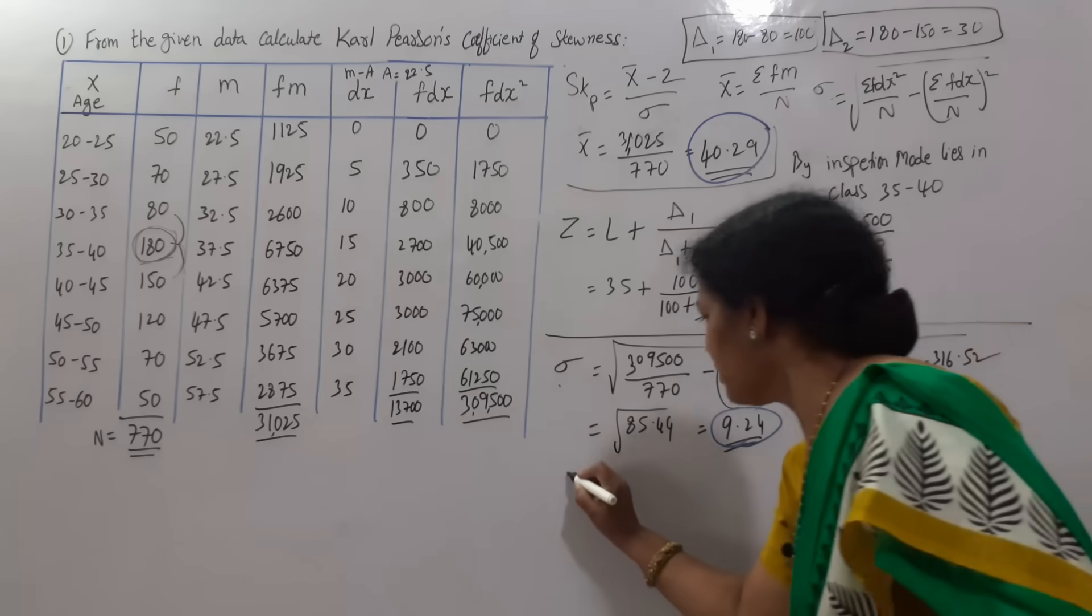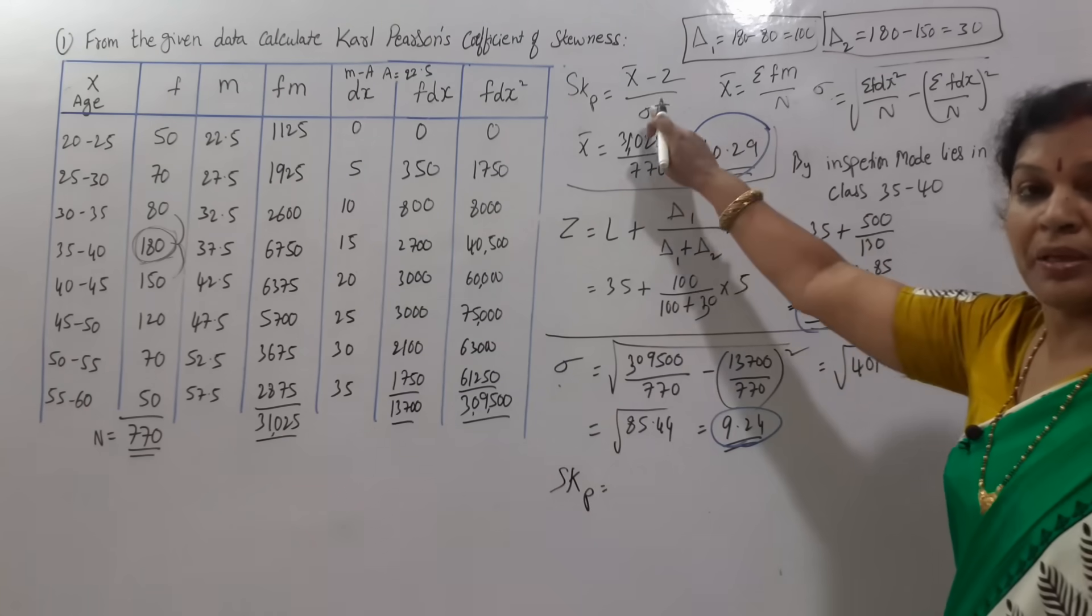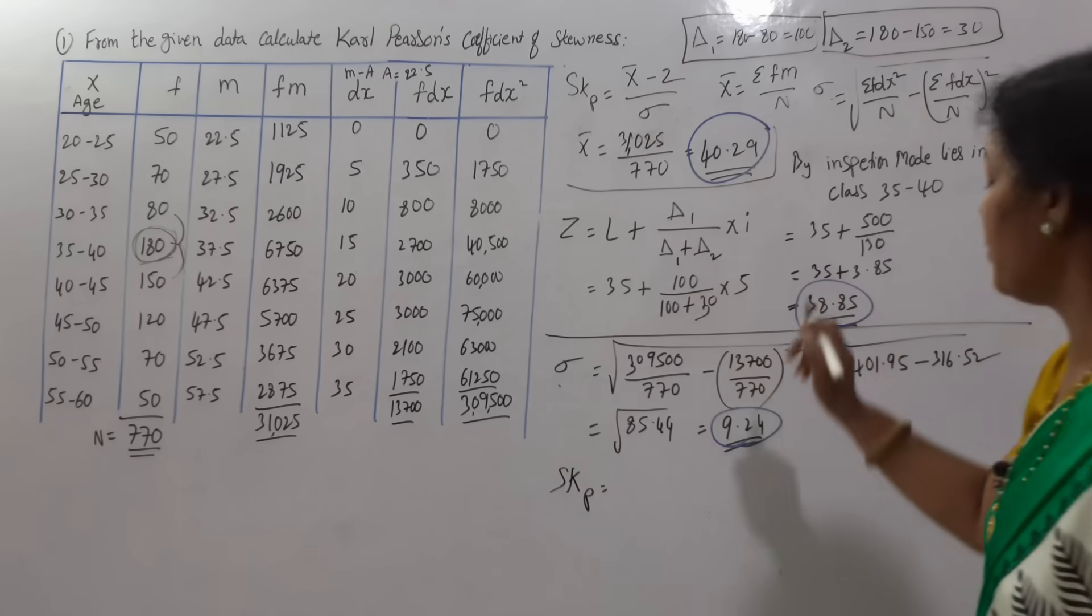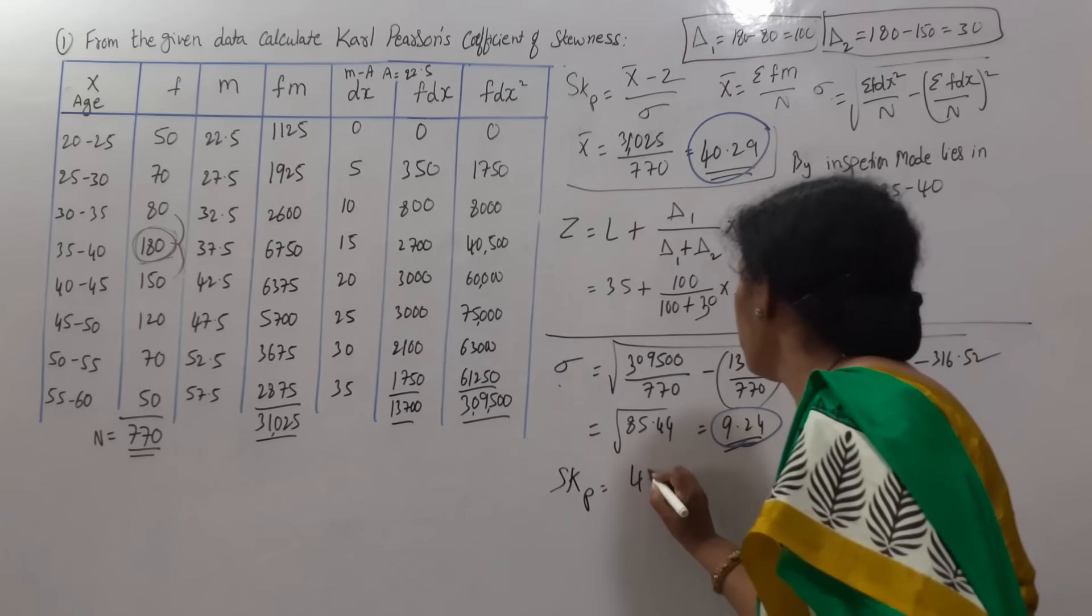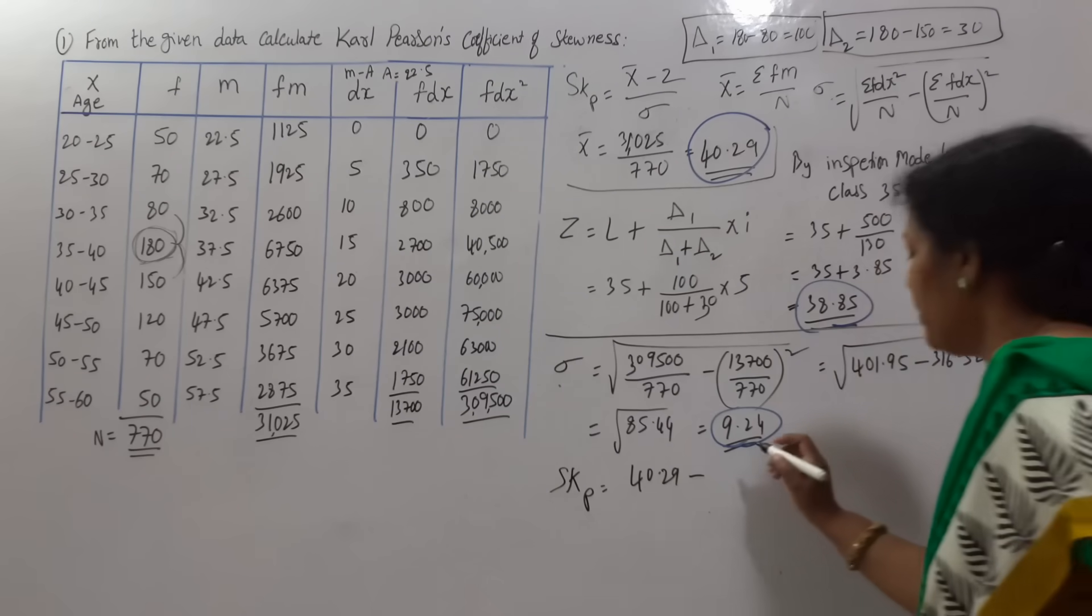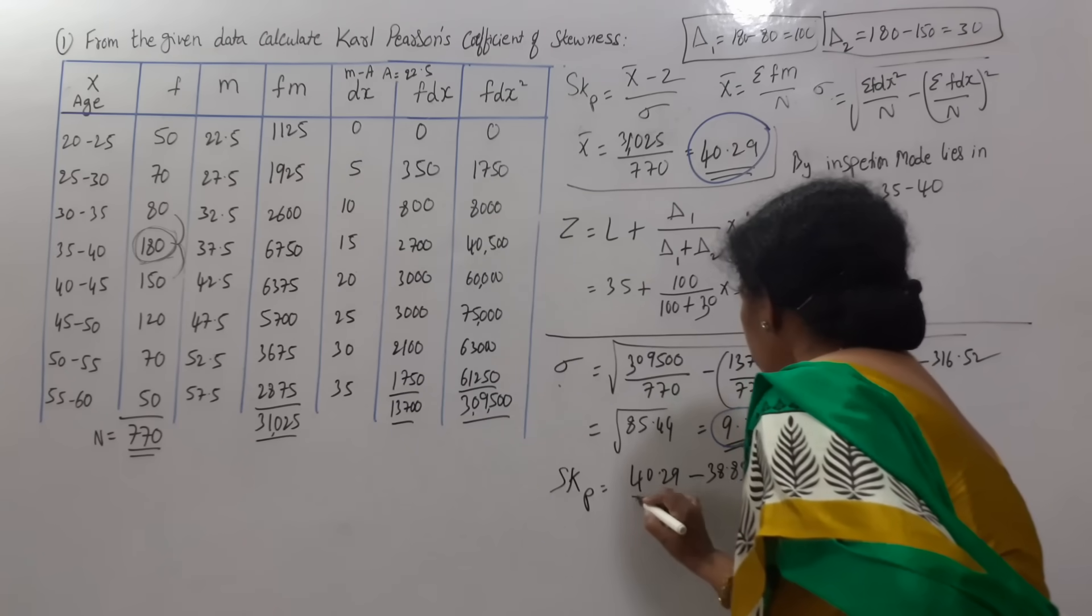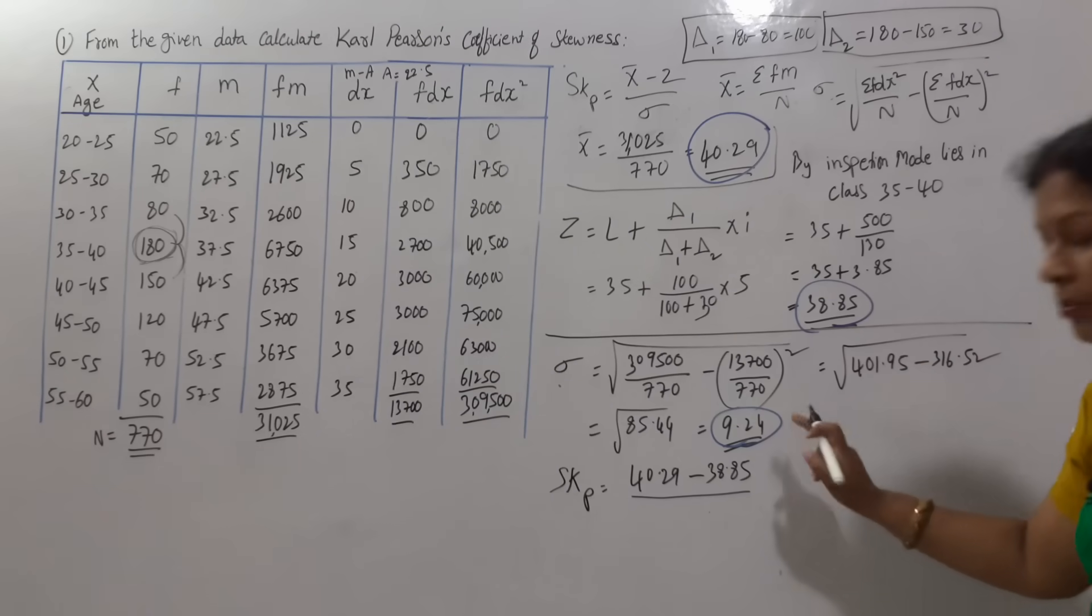Now SKP is equal to the formula, x bar minus z by ρ. X bar is 40.29 minus z, z is 38.85, by standard deviation 9.24.